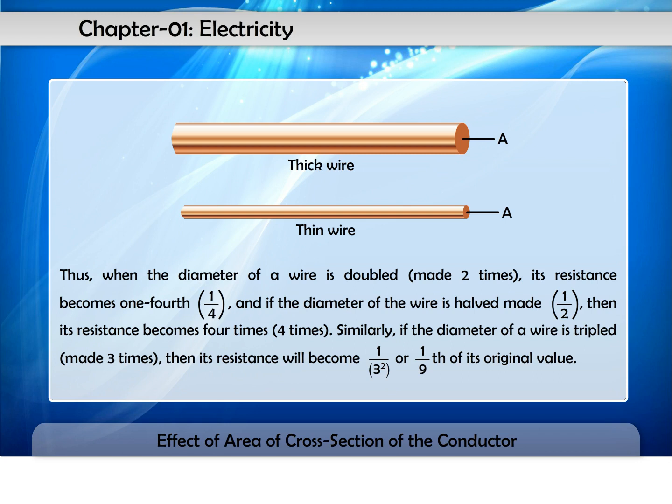If the diameter of a wire is tripled, made three times, then its resistance will become one upon three square or one-ninth of its original value.